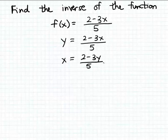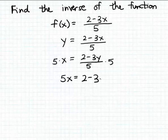So I can solve this equation for y by first multiplying both sides of this equation by 5. And of course on the right hand side the 5s are going to divide out. So I have 5x is equal to 2 minus 3 times y.